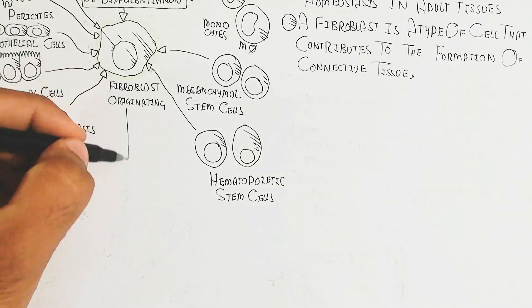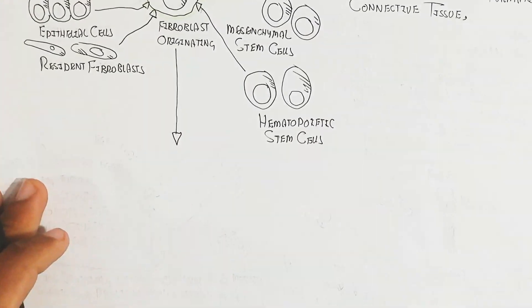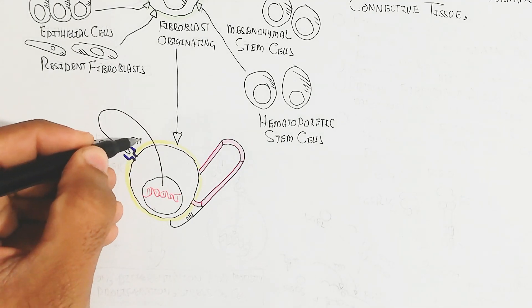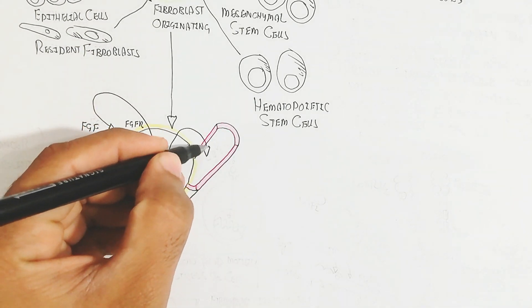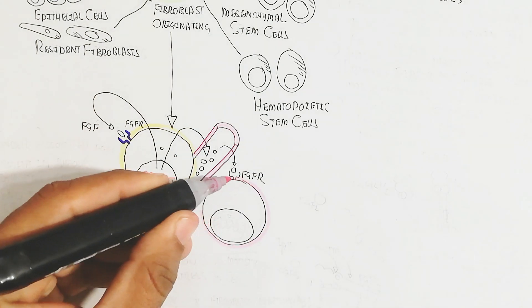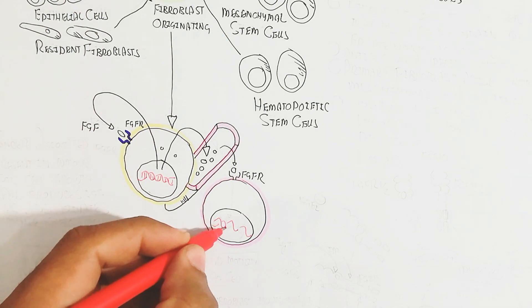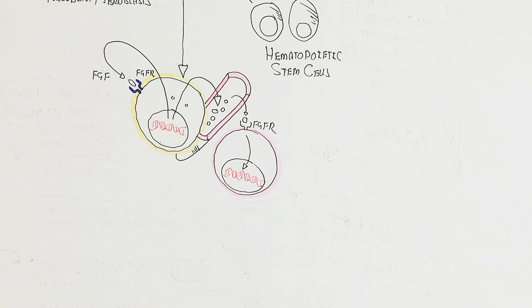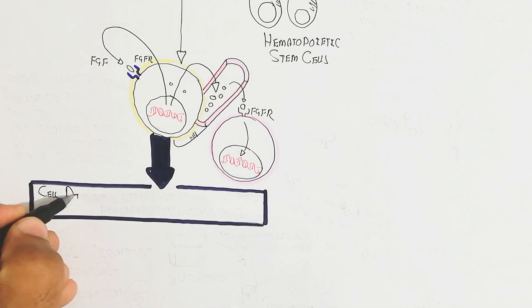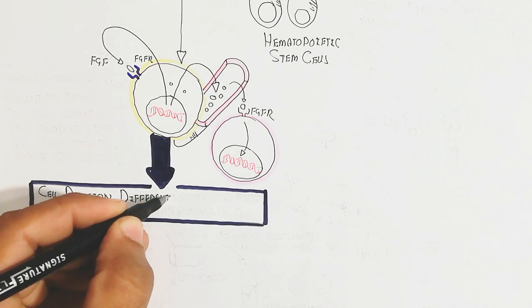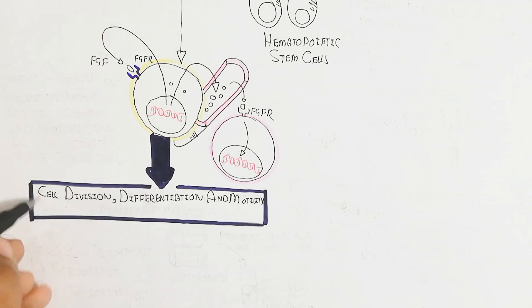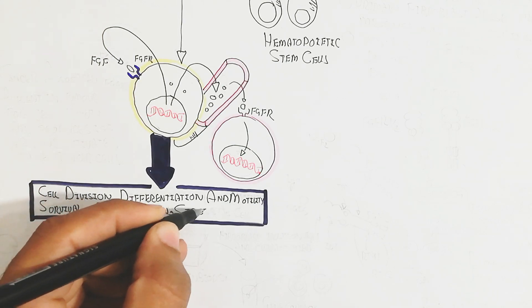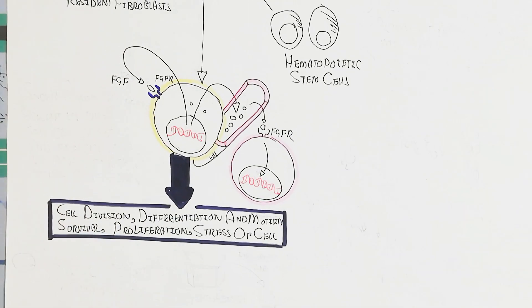Mesenchymal stem cells and hematopoietic stem cells also convert into fibroblasts. The function of fibroblast is generally to bind with the FGF receptor autocrinely, paracrinely, and endocrinely with different tissue types, giving responses such as cell division, differentiation, motility, survival, proliferation, and cellular stress response.